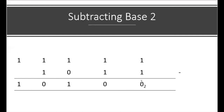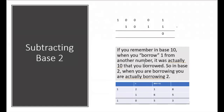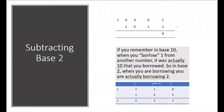Now we have 100011 minus 1011. Starting from the right: 1 from 1 is 0. But then we have 1 from 0, which we can't do. This is similar to borrowing in base 10: when you borrow 1 from a neighboring column in base 10 subtraction, that borrowed 1 actually represents 10. In the same way, in base 2, when you borrow, you're actually borrowing 2.